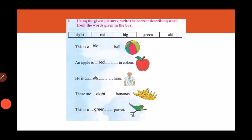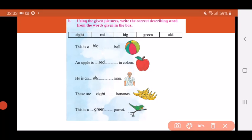Now let's do the last exercise for this topic. Using the given pictures, write the correct describing word from the words given in the box. What are the words given in the box? Let us read them aloud: eight, red, big, green, old.